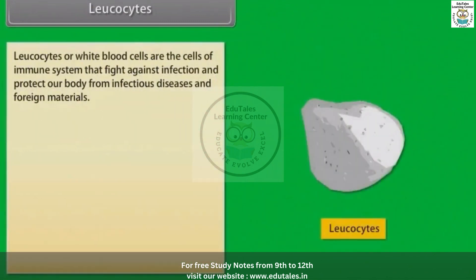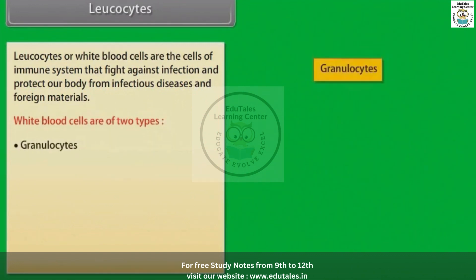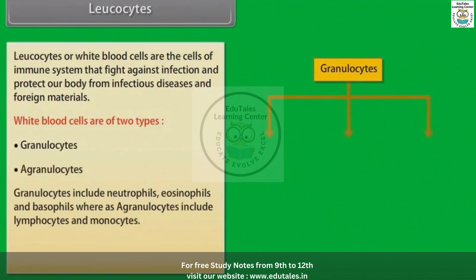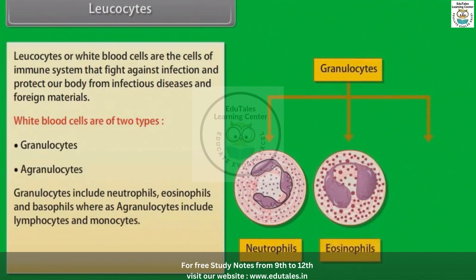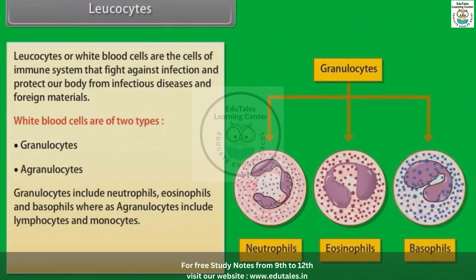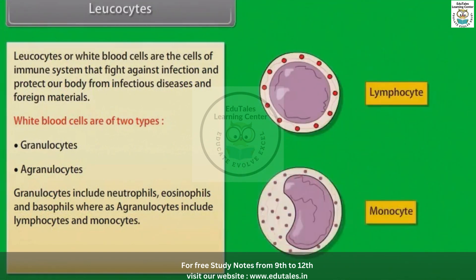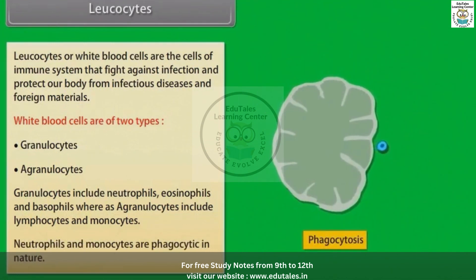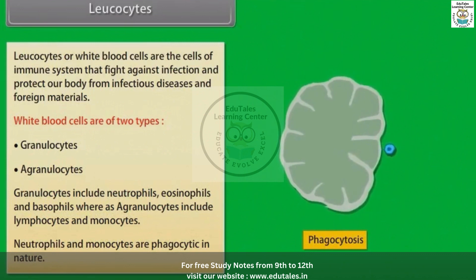Leukocytes, or white blood cells, are the cells of the immune system that fight against infection and protect our body from infectious diseases and foreign materials. White blood cells are of two types: granulocytes and agranulocytes. Granulocytes include neutrophils, eosinophils, and basophils, whereas agranulocytes include lymphocytes and monocytes. Neutrophils and monocytes are phagocytic in nature.